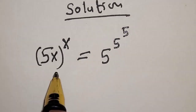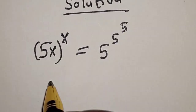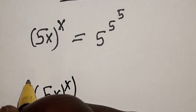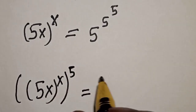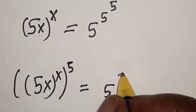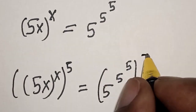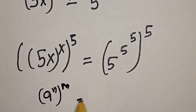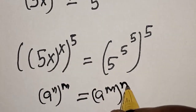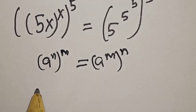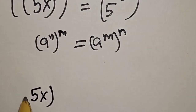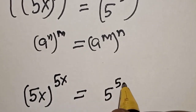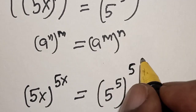Then let's take the power of both sides by 5. That is, 5s raised to power s raised to power 5 is equal to 5 raised to power 5 raised to power 5 raised to power 5.